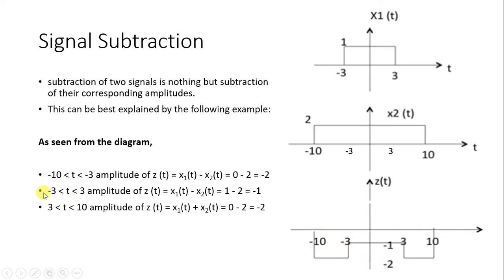Now from minus 3 to 3: x1(t) has a magnitude of 1, and x2(t) has a magnitude of 2. So 1 minus 2 equals minus 1. The region minus 3 to 3 of the resultant has a magnitude of minus 1.